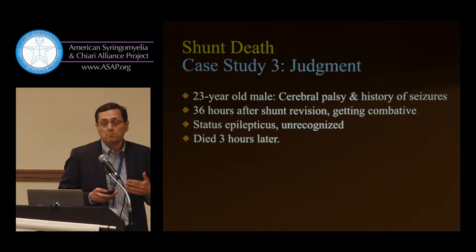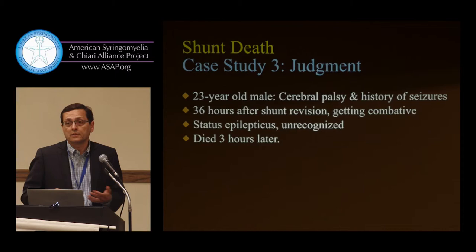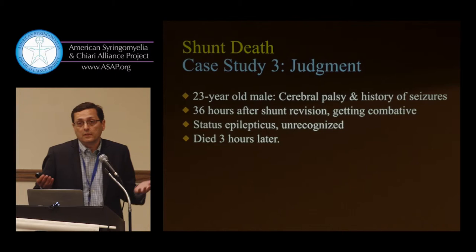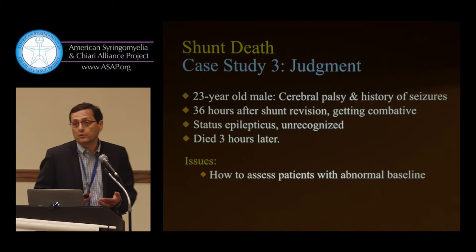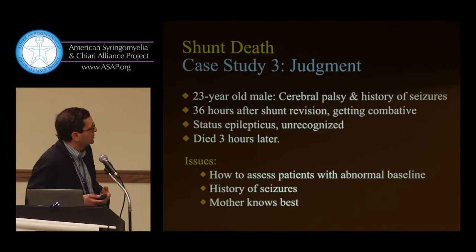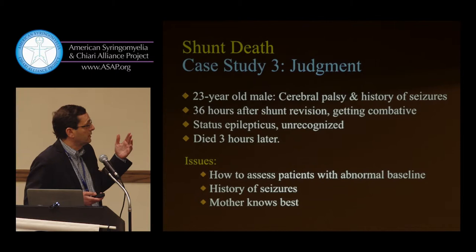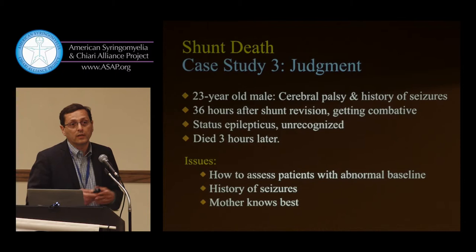This fellow was in the hospital but because he was developmentally delayed, the nurses could not figure out that he was actually worse. His mom had had to go to work. He had a seizure; they looked at the chart — he had a history of seizures. He died three hours later from shunt malfunction in a hospital bed. This raises issues of how to assess patients with an abnormal baseline and how communication and education are primary factors in why this child died.